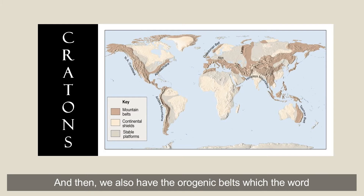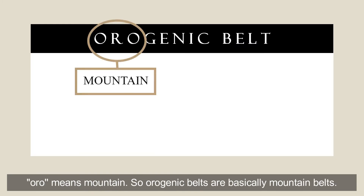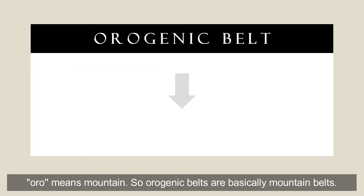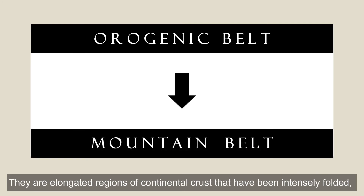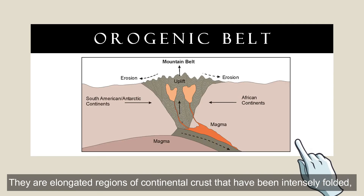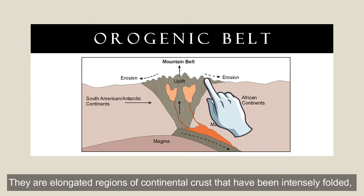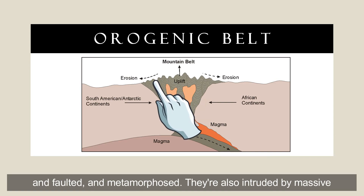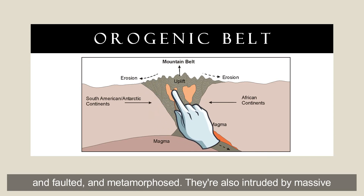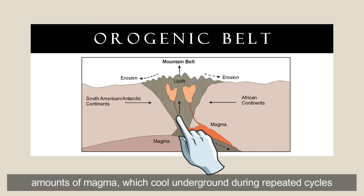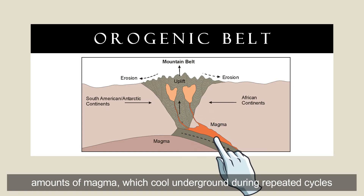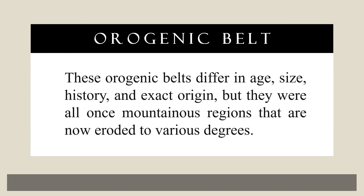We also have orogenic belts — the word 'oro' means mountains — so orogenic belts are basically mountain belts. They are elongated regions of continental crust that have been intensely folded, unfolded, and metamorphosed. They are also intruded by massive amounts of magma which cool underground during repeated cycles of mountain building. These orogenic belts differ in age, size, history, and exact origin, but they were also once mountainous regions that are now eroded to various degrees.